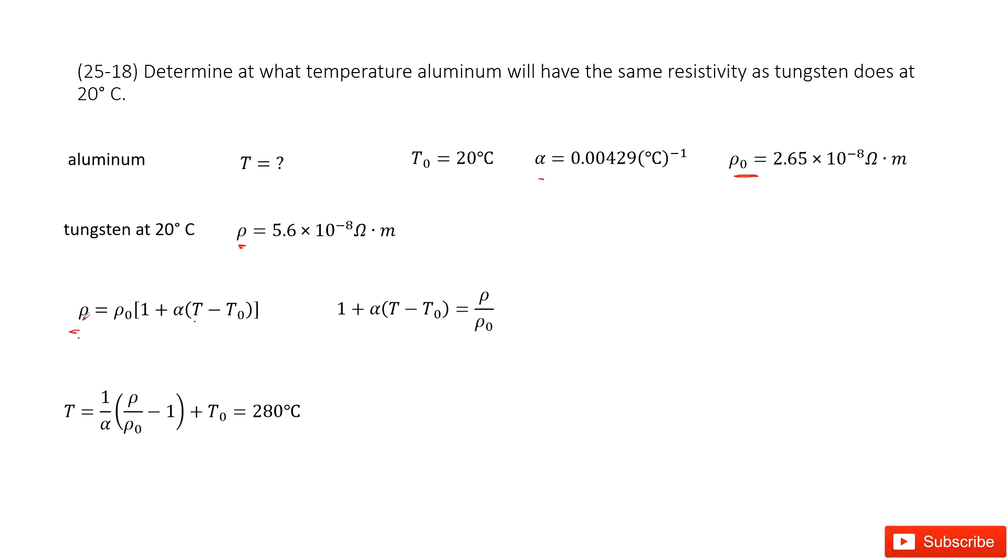Now you can see in this function: rho is given, rho naught is given, alpha is given, T naught is given. So can you find T? Yes, very easy. You solve this equation and convert it. Get the function for T, and then input all the given quantities. Get the answer there. Thank you.